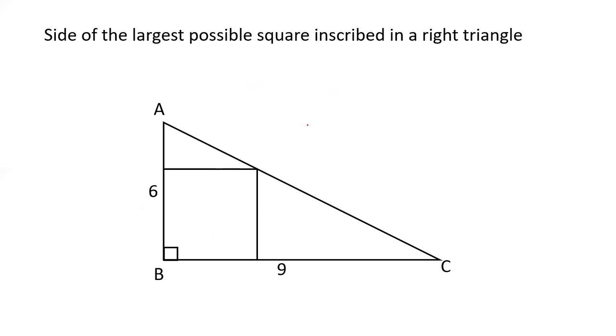For another example, to find the largest possible square side, take the perpendicular sides product and divide by the sum.